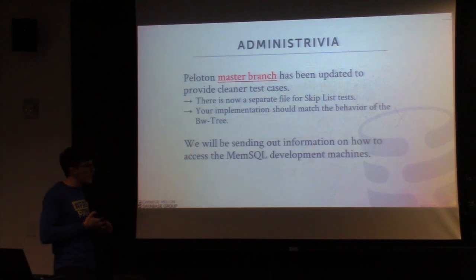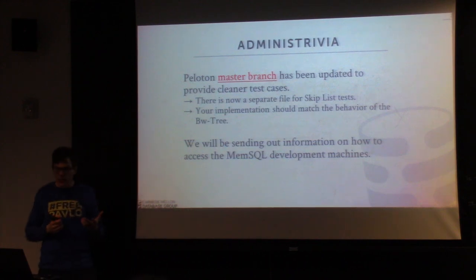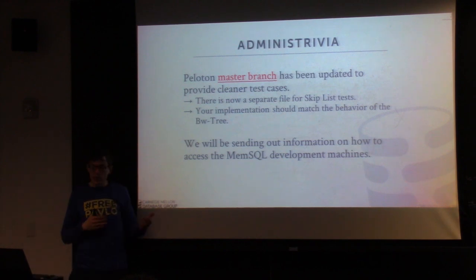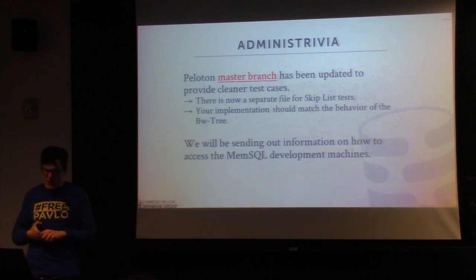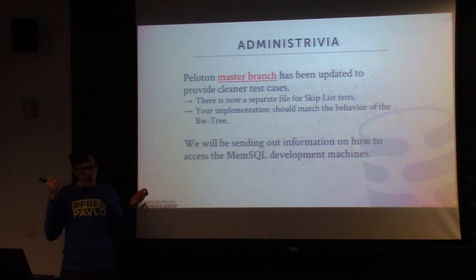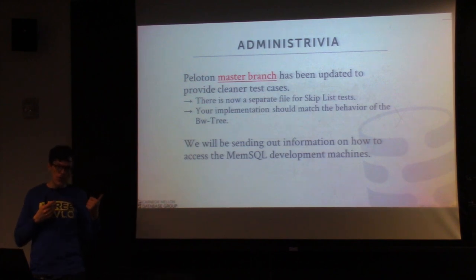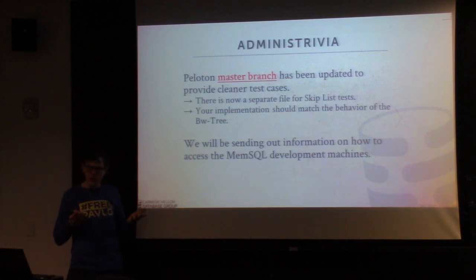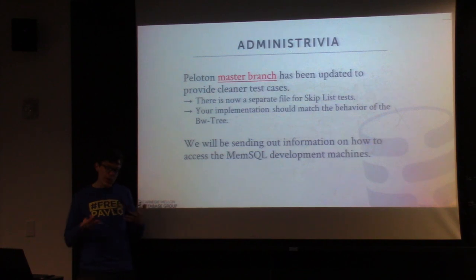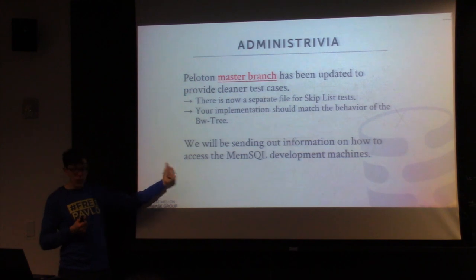We'll be sending out information either today or tomorrow about how to get access to the development machines we have dedicated for the class. These are machines that MemSQL donated to us last year. These are going to be what you want to use to test the scalability of your implementation, because these machines are dual socket — each socket has six cores with hyper-threading, so 12 cores, giving 24 cores total with about 120 gigs of RAM. Way more than you have on your laptop. You can do all your development locally, but when you want to test your implementation to see whether you have any bottlenecks, you'll want to use these machines.